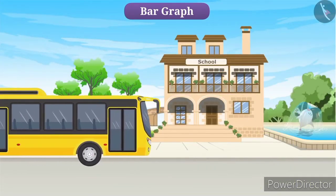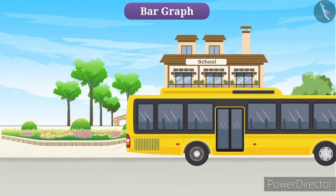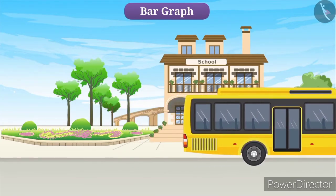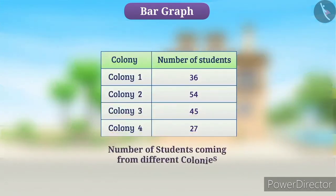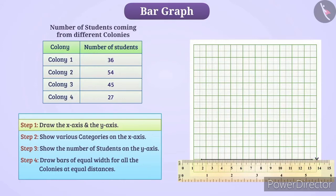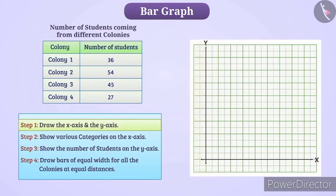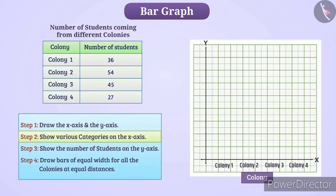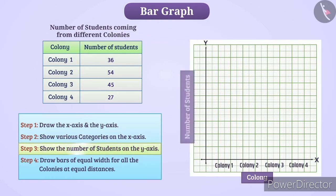For example, a number of students coming from different colonies from school. It is shown in the following data. Let's make a bar graph using this data. First, we will draw the x-axis and y-axis. We will show various categories on the x-axis — the name of the colony. Next, we will show the number of students on the y-axis.